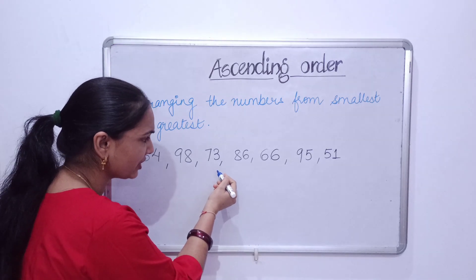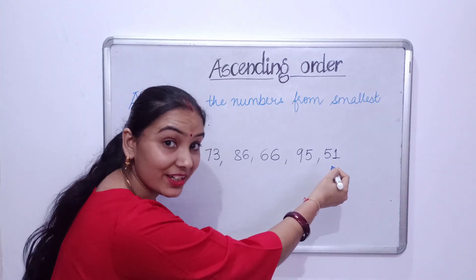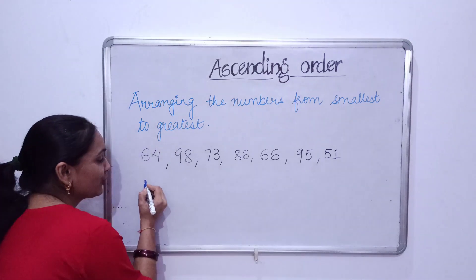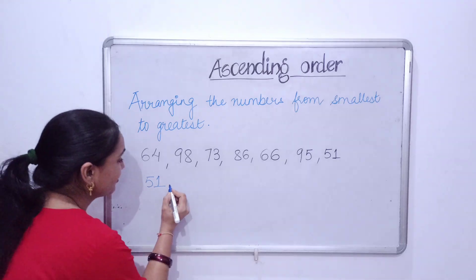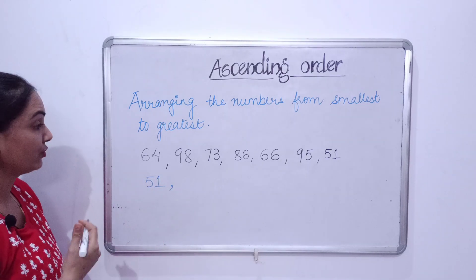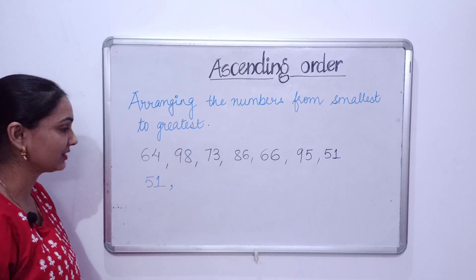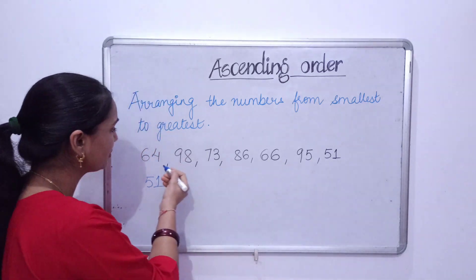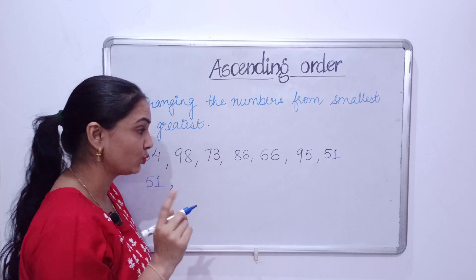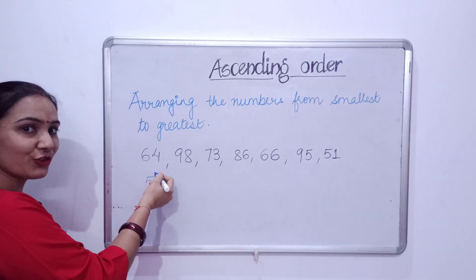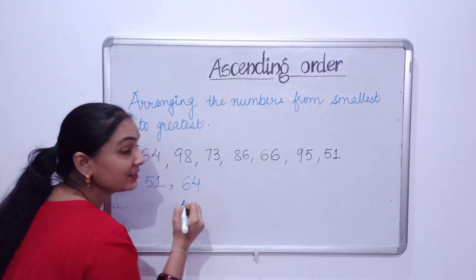So which will be the smallest? Is it fifty-one? Yes! So first of all we'll write fifty-one. Now we will choose the next number after fifty-one from these. Which one will be next? Sixty-four. Yes! So we'll write sixty-four.